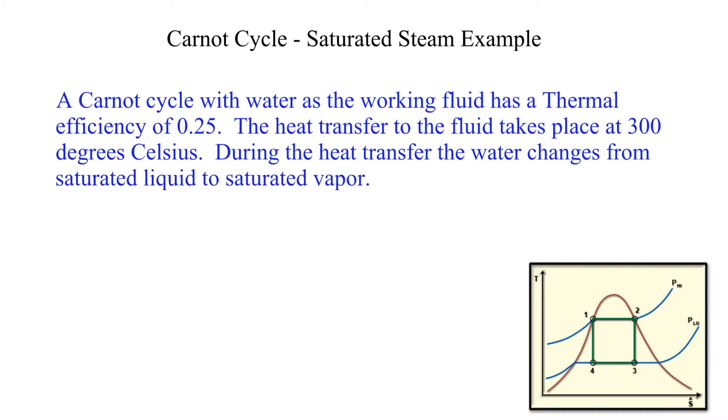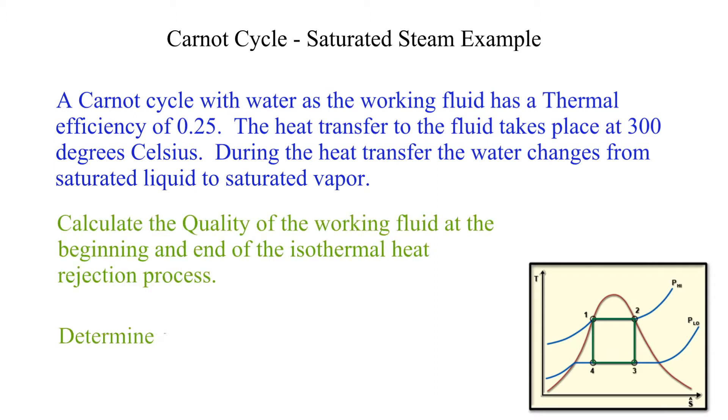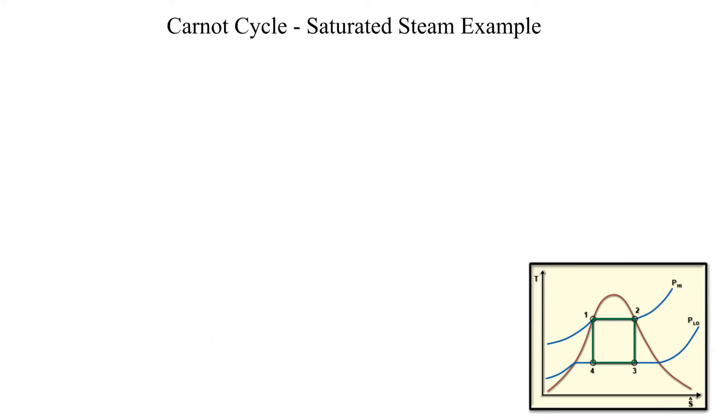The Carnot Cycle is shown on the TS diagram. We will be determining the qualities at points 3 and 4 and the specific work out of the cycle. We will need to determine the temperature for the isothermal heat transfer out of the cycle.